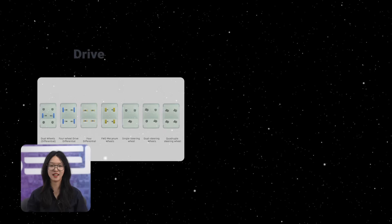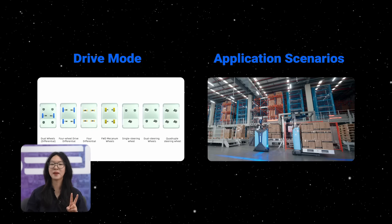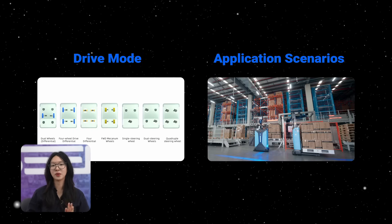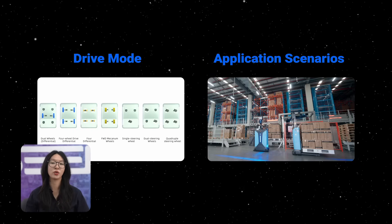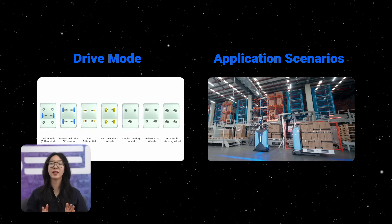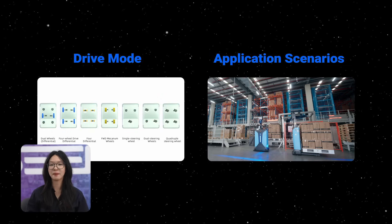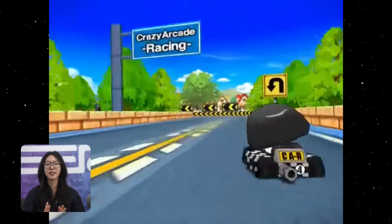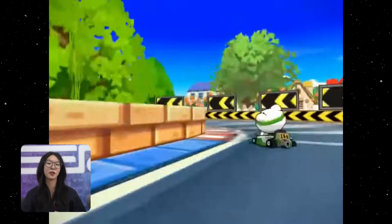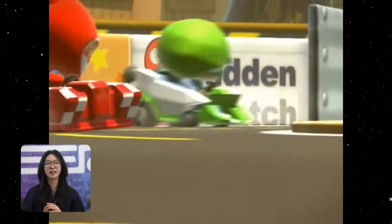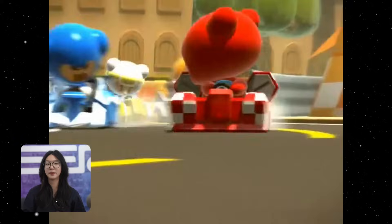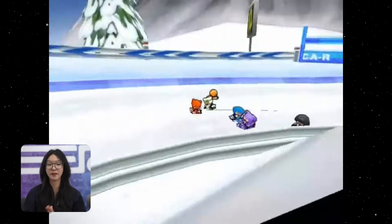So, how do we classify mobile robots? There are two main ways: by how they move — what we call the drive mode — and by where they are used, which are the application scenarios. Let's start with drive modes. Think of these as the go-karts of the robot world: simple, nimble, and surprisingly effective.